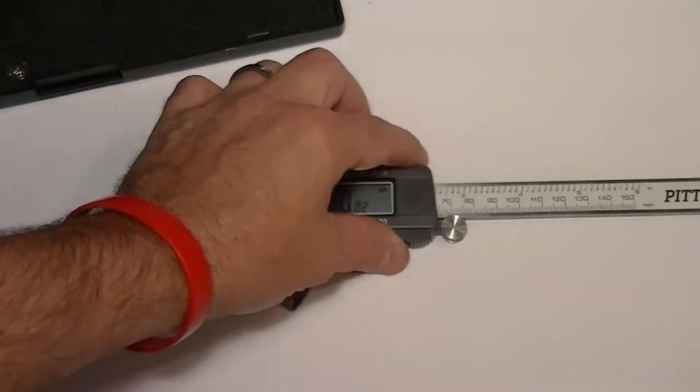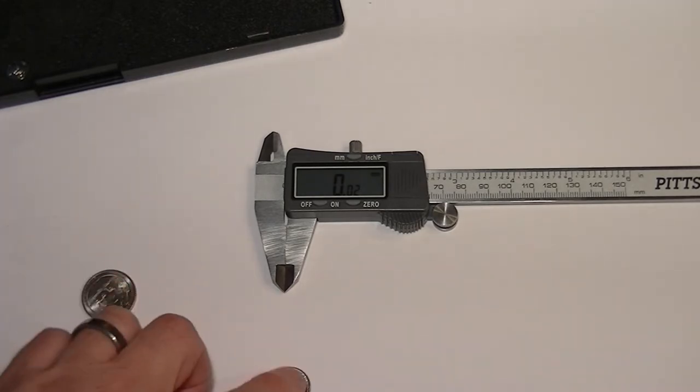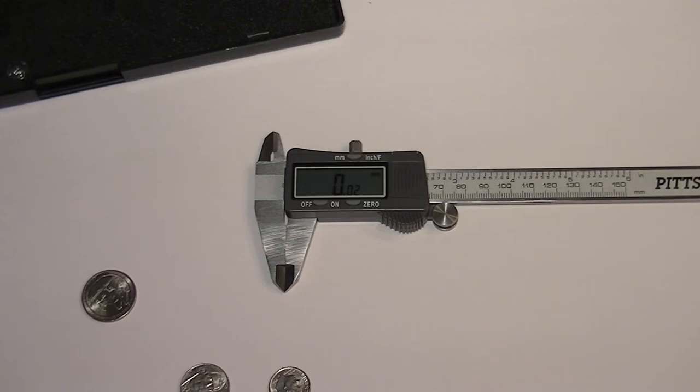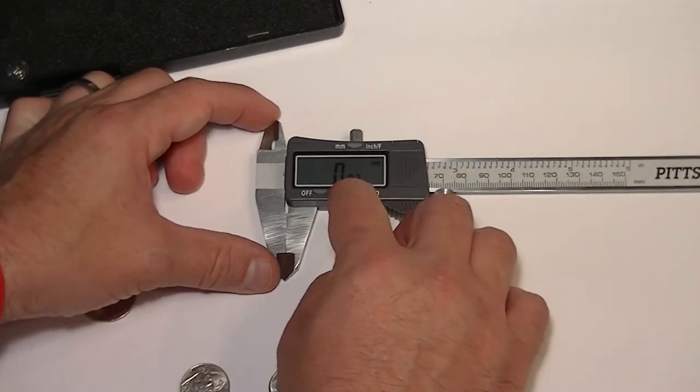I found the best way to do that is to use something that is pretty standard. I'm going to use a diameter of a nickel, a quarter, and a dime, which are basically known quantities. A nickel is supposed to be 21.21 millimeters or 8.35 inches. So let's go with that. First, zero it.